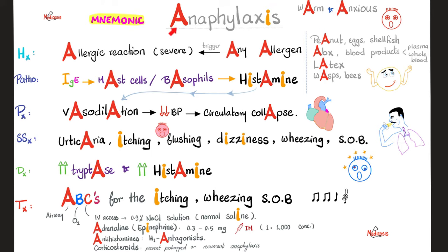This mnemonic is all about the letter A, and sometimes the I. Anaphylaxis is a severe allergic reaction. Any substance, any allergen can trigger anaphylactic shock. Common ones include peanut allergy, egg allergy, shellfish, iodine, food additives, antibiotics — especially penicillin — allergy to blood products like plasma, cryoprecipitate, whole blood, latex allergy, allergy to bee stings, wasps, etc.